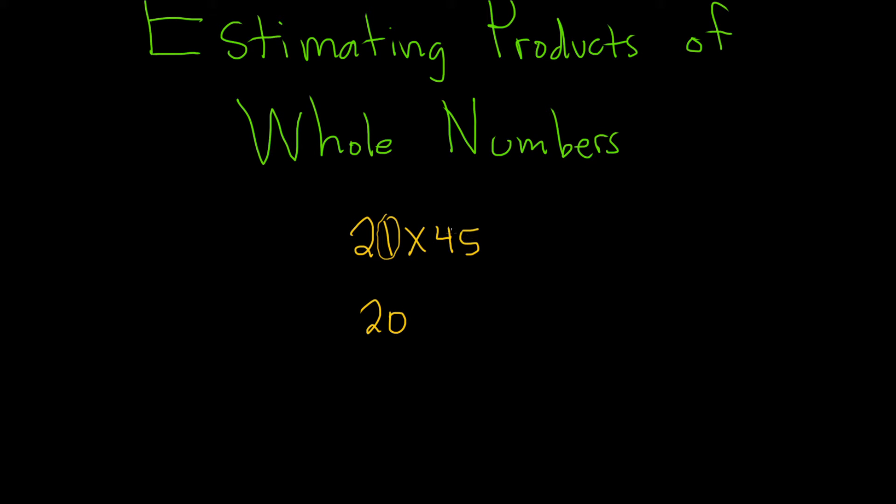And this one, the highest place value is also the tens place. There's a 5 here. So whenever this number is 5 or bigger, you round up, so times 50. Step one, you just round both of the numbers like you normally would. And then you just multiply.